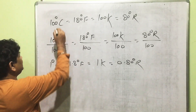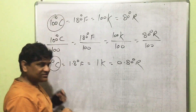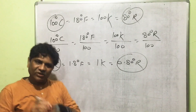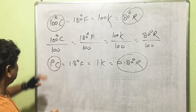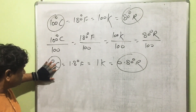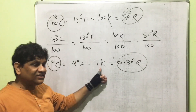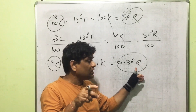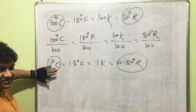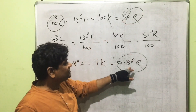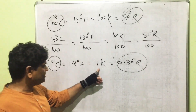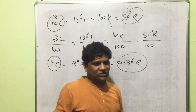Now, what is the meaning of 1°C = 1.8°F = 1 K = 0.8°R? Here, 100 division represents the full scale, and 1 division represents the length of one unit on each scale. So the length of 1 unit on the centigrade scale corresponds to 1.8 units on Fahrenheit and 0.8 units on Réaumur — these are the lengths of one division on different types of scales.